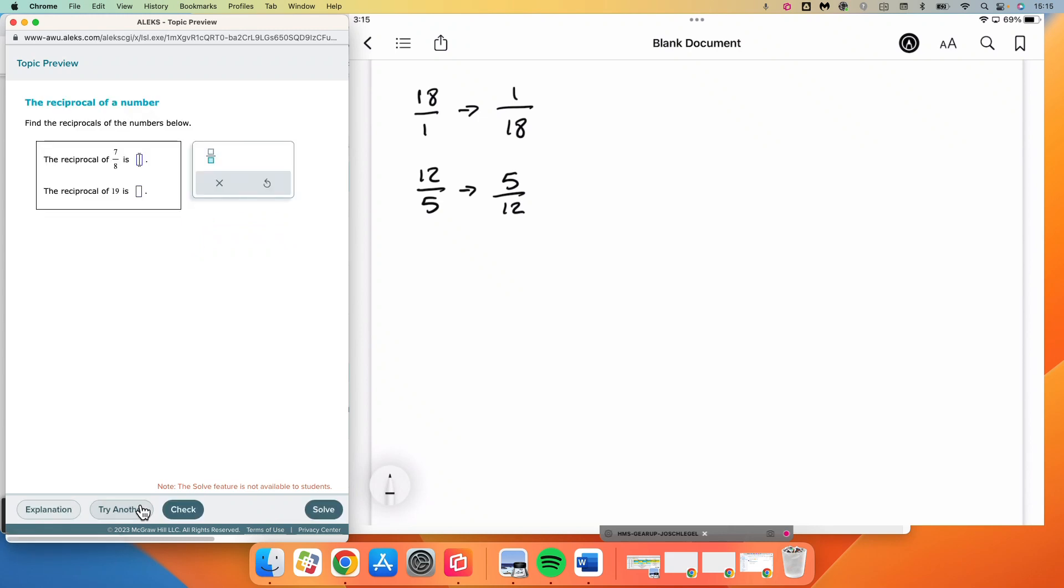Okay, we'll do a couple more. I'm only going to do a couple examples here because this is really a fairly straightforward idea. So 7 over 8 is our first one. 19 is our second one. If I turn 7 over 8 upside down and make the reciprocal, I get 8 over 7.